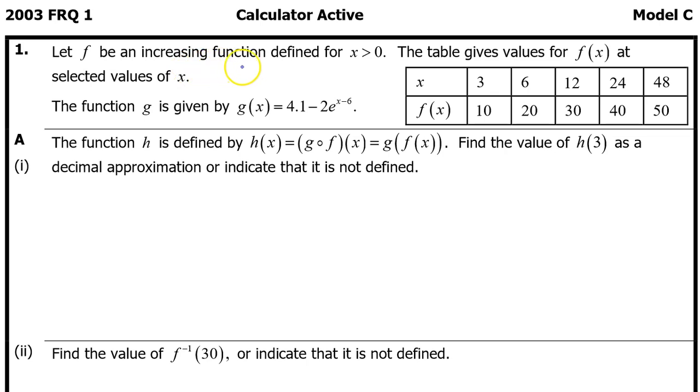Let f be an increasing function defined for x greater than zero. The table gives values for f of x at selected values of x. The function g is given by g of x equals 4.1 minus 2 times e to the x minus 6 power.